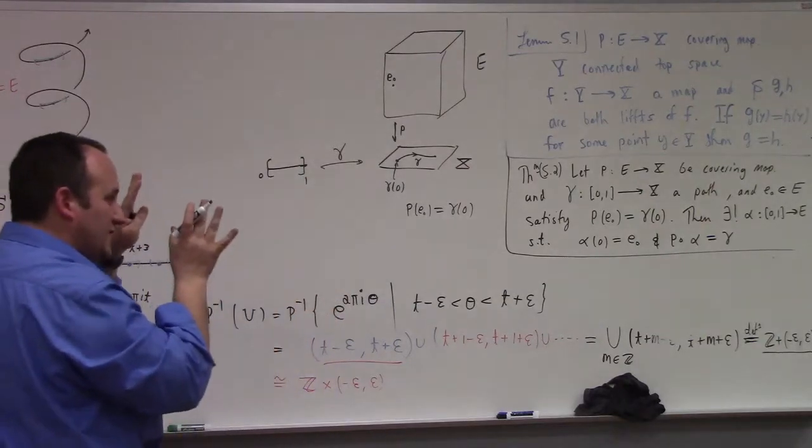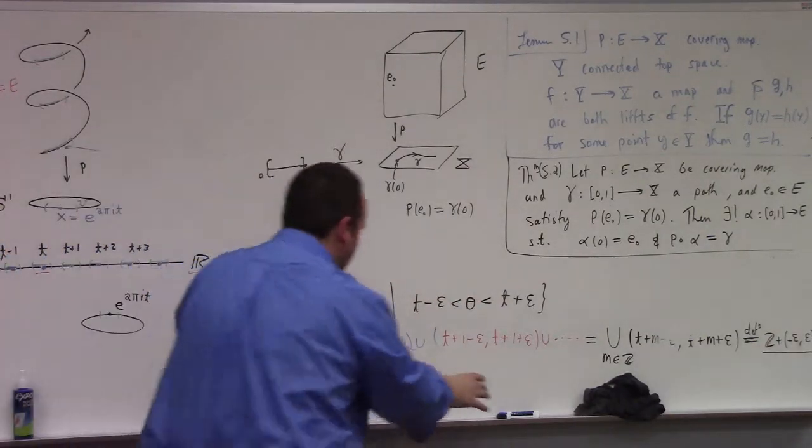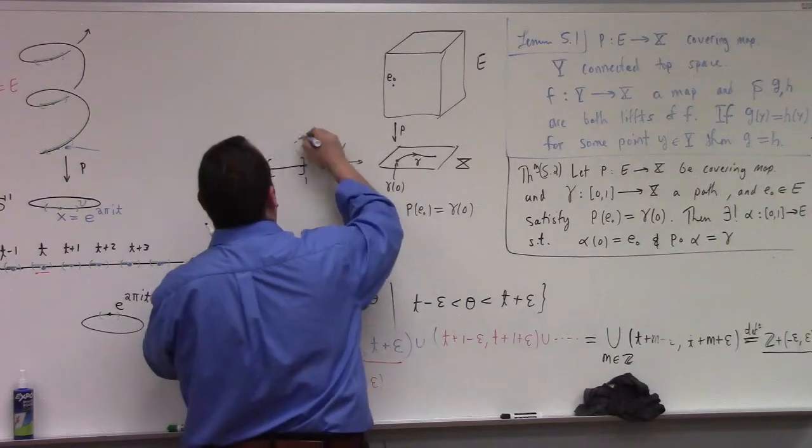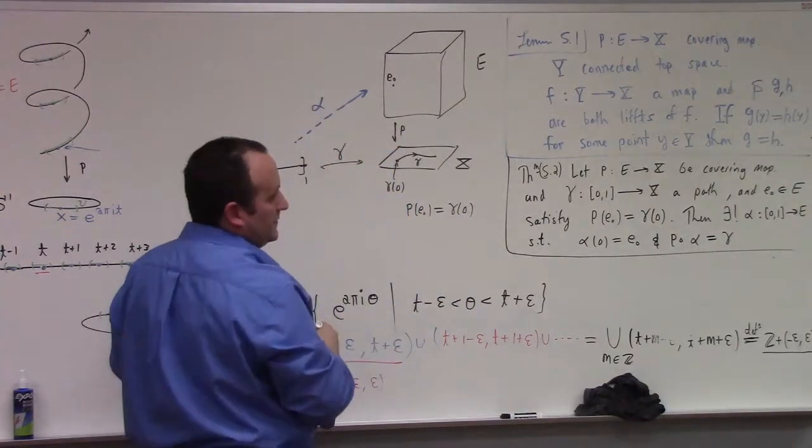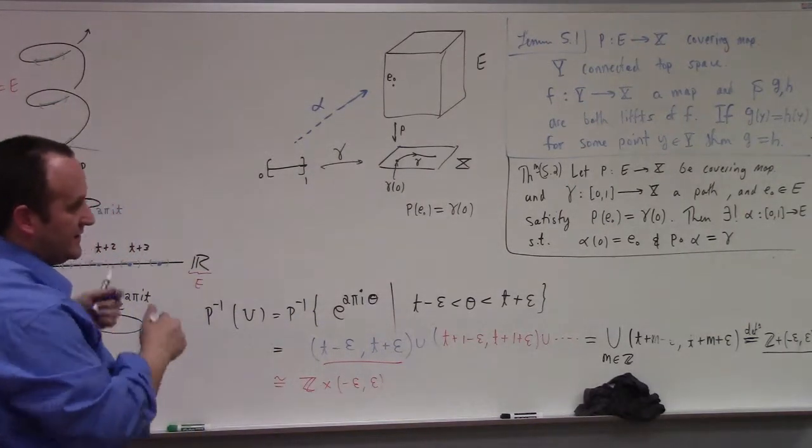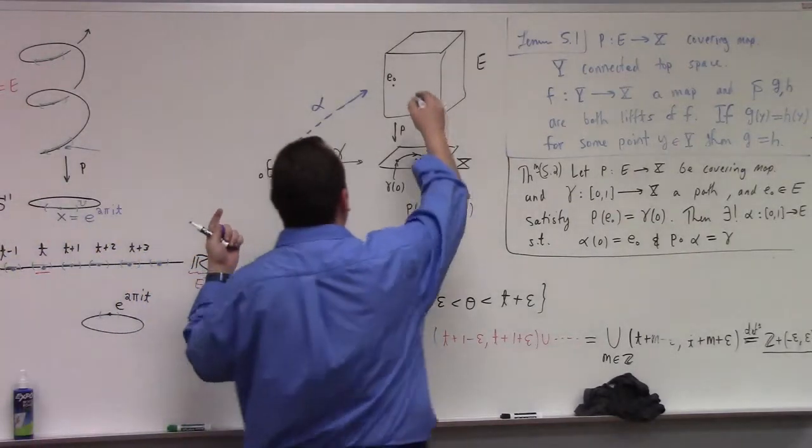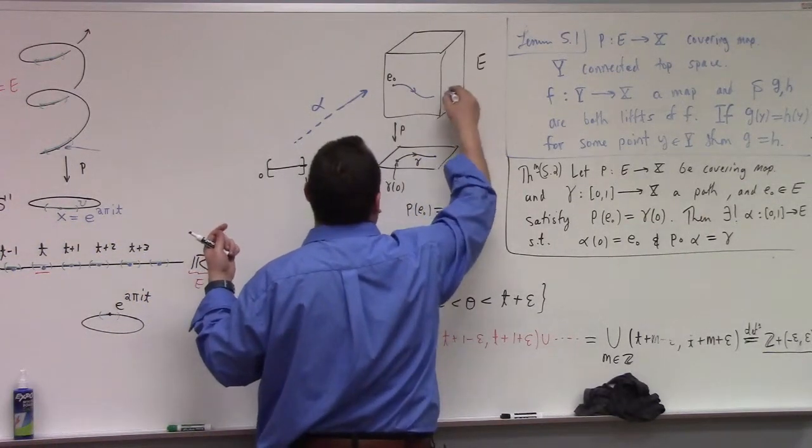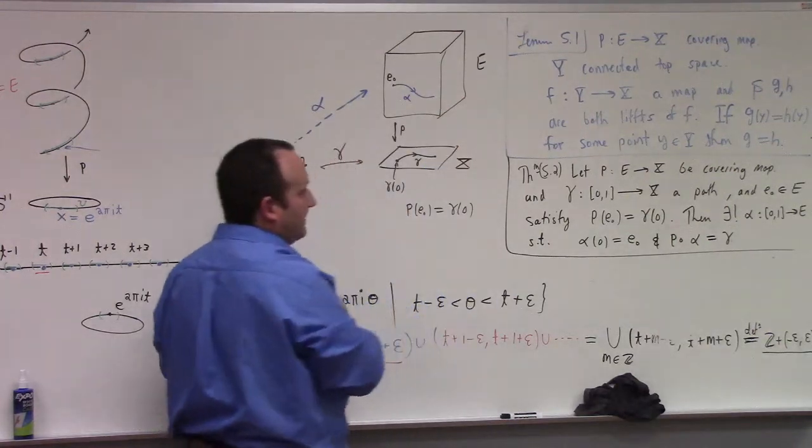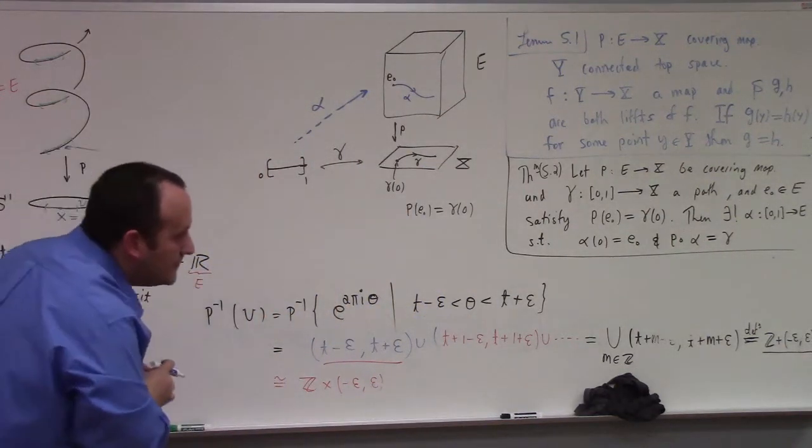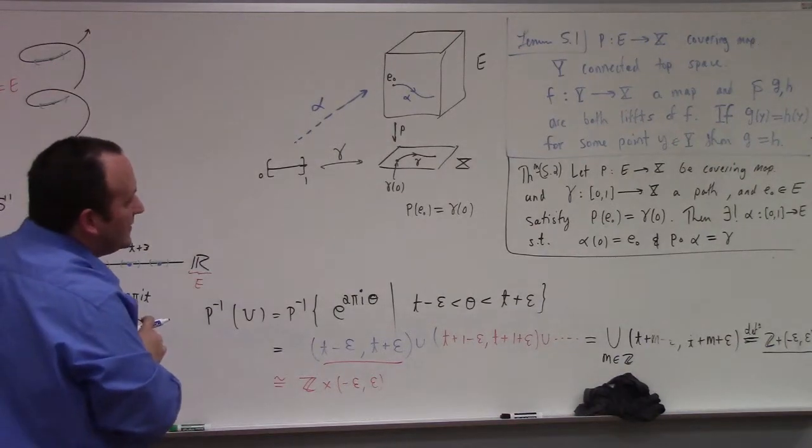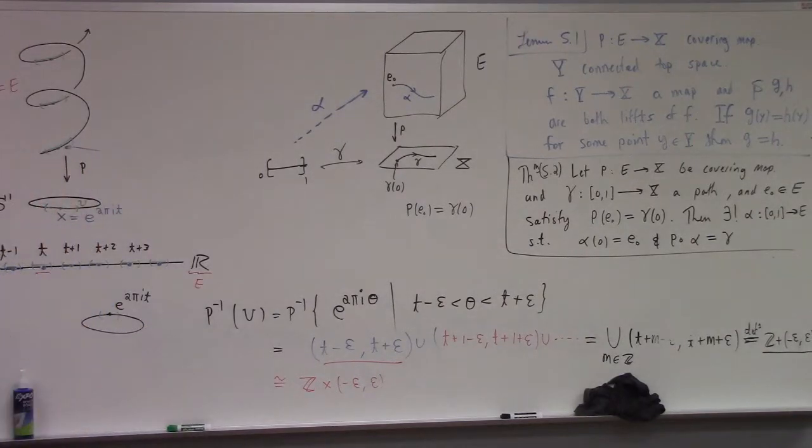My picture is not quite the right picture really. Oh, you're right, so I should just make it a stack of pancakes something like that - yeah people do that. So p(e₀) goes like this, so p(e₀) equals γ(0). Then there exists a unique lift, the lift α from [0,1] to E such that it begins at e₀ and goes somewhere like that, α.